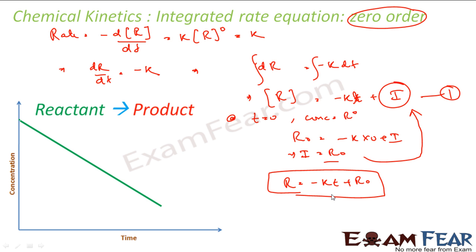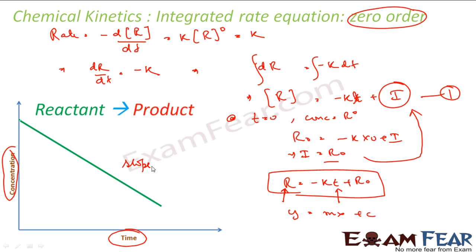With this, the equation becomes R = minus kT + R₀. If you see this equation: R is the concentration at any given point of time (a variable), T is a variable, k is a constant, and R₀ is the initial concentration. This is almost similar to y = mx + c. So if I draw concentration on the y-axis and time on the x-axis, I will get a straight line with a slope of minus k.